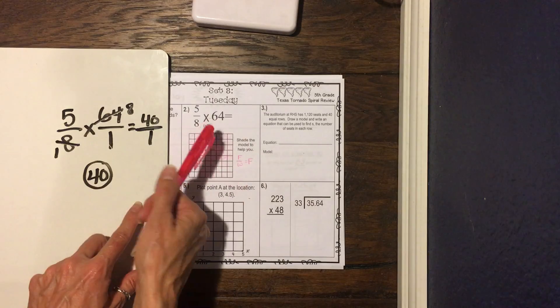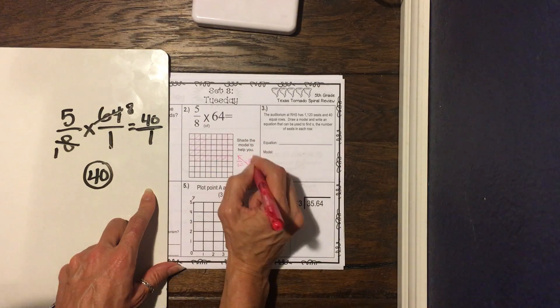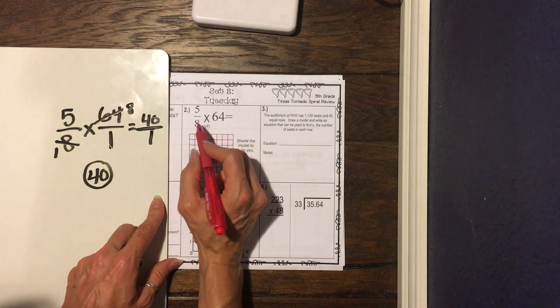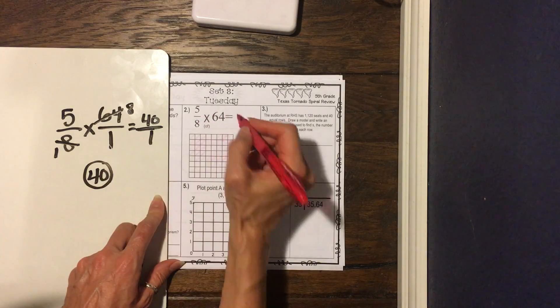So if we come back over here, we're multiplying this, and we got 40.